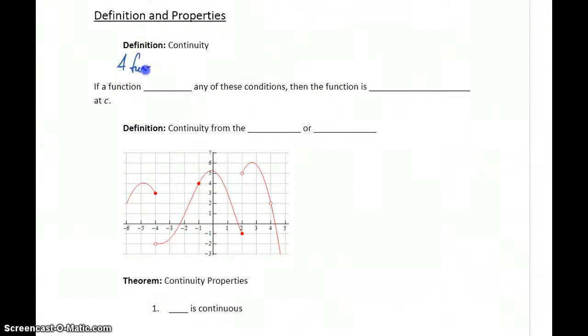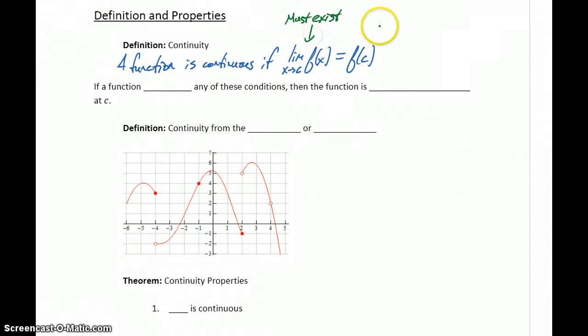A function is continuous if the limit as X approaches some value C of our function equals the function value at that point. So in order for this definition to hold, this limit must exist.